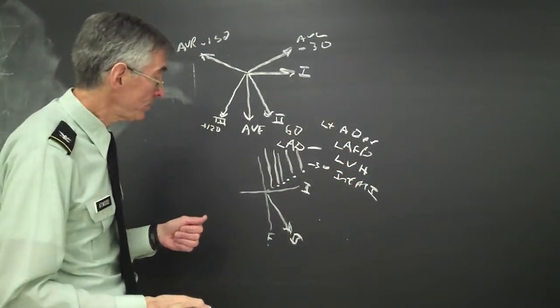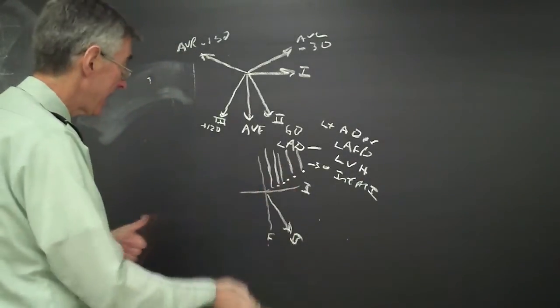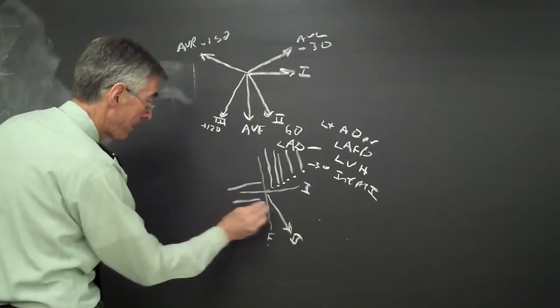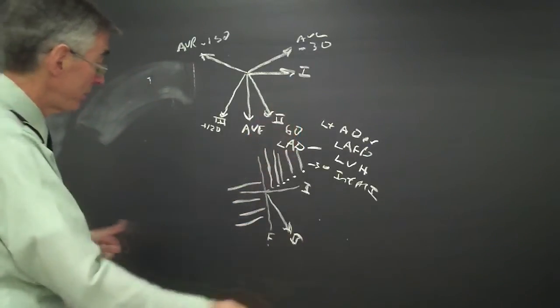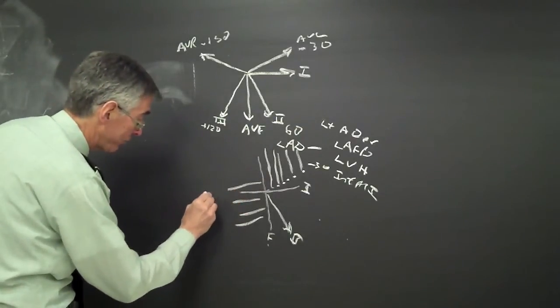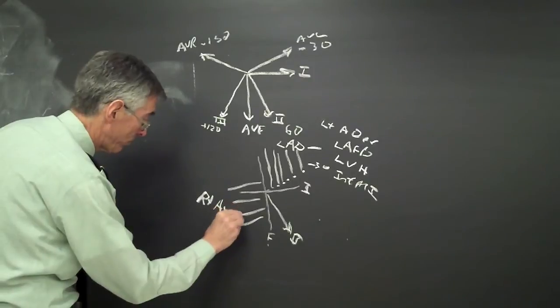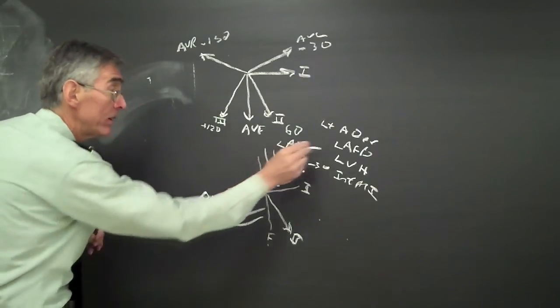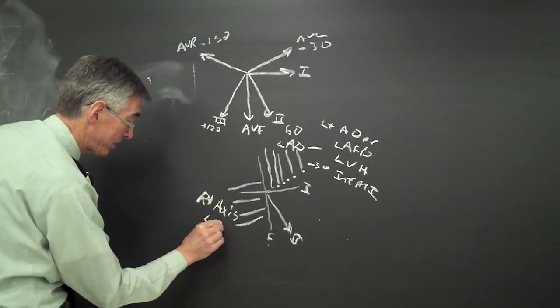With right axis deviation, in other words, if it's negative in one and positive in two, it's going to be right axis deviation. With right axis deviation, to add some symmetry, you want to think left posterior fascicular block.